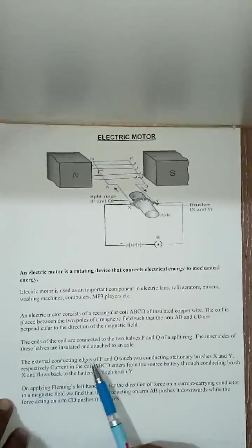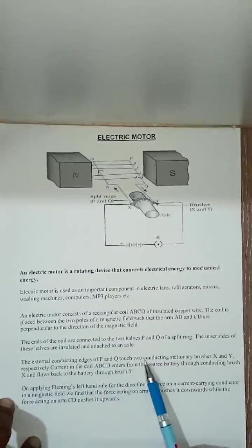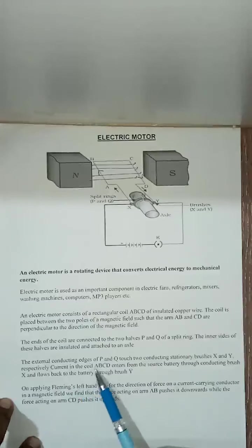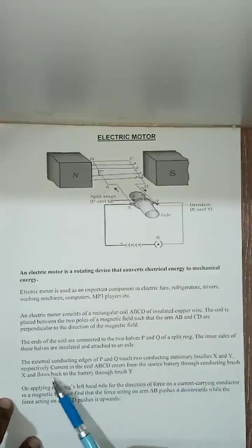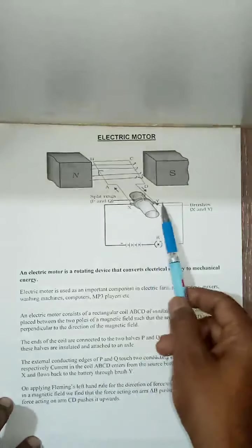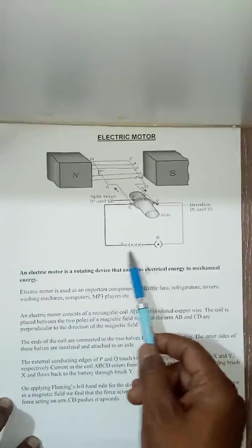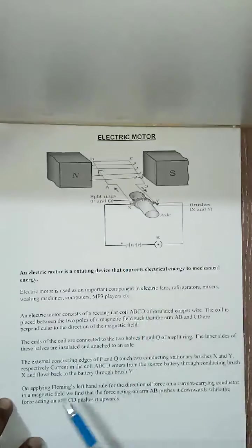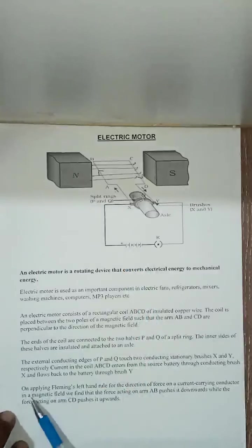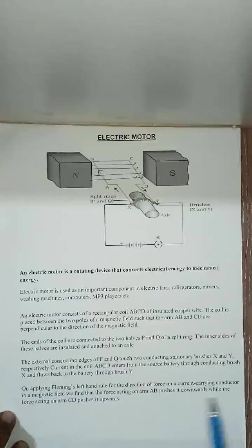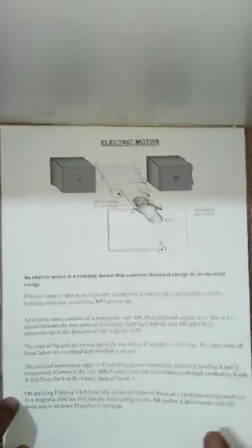The external conducting edges P and Q touch two conducting stationary brushes X and Y respectively. Current in the coil ABCD enters from the source battery through the conducting brush X and flows back to the battery through brush Y. On applying Fleming's left hand rule for the direction of force on a current conductor in magnetic field, we find that the force acting on arm AB pushes it downwards while the force acting on arm CD pushes it upwards.